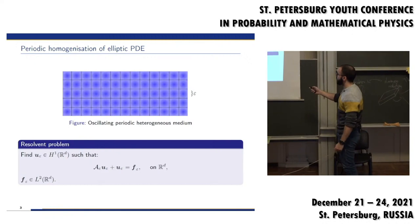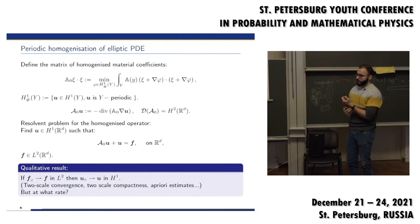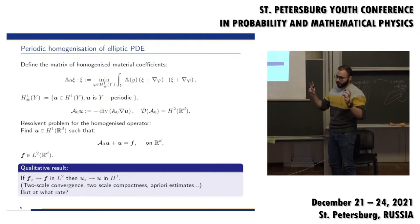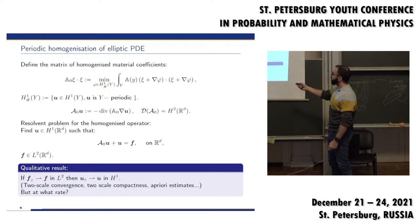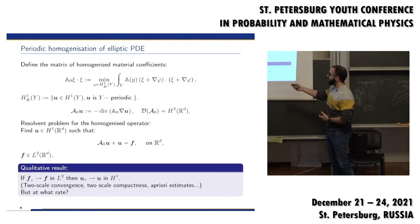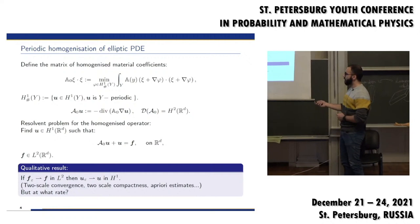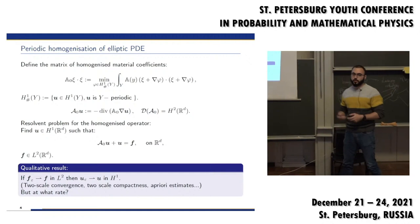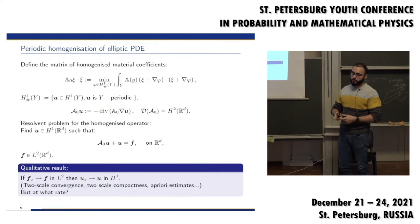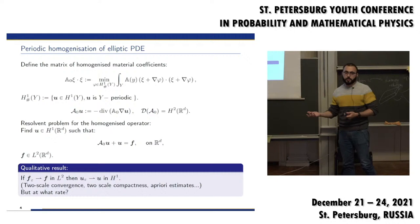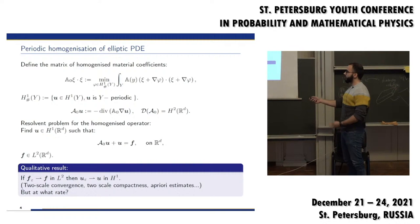One can define a fixed homogenized matrix that does not depend on X, via a minimization formula, and define the operator associated to this matrix. Studying the resolvent problem, one can prove a qualitative approximation: if the right-hand side converges weakly, the solutions also converge weakly to the solution of the homogenized problem. But this qualitative result doesn't tell you the rate of convergence or what error you are making when replacing the models.